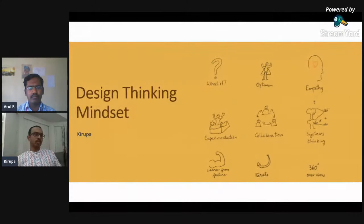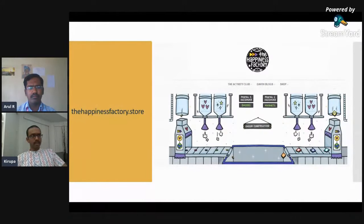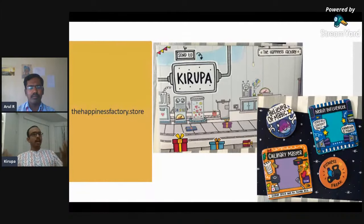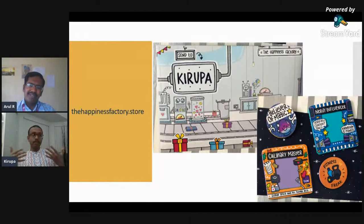Experimentation - a mind that quickly makes a prototype, a mind that is comfortable in exploring an idea and letting it go when it doesn't work. Collaboration - a mind that is open to talk to people with different skill sets. Systems thinking - a mind when asked to make a child's bike is considering the whole experience of a child riding the bike.